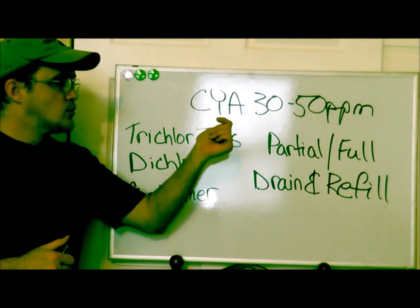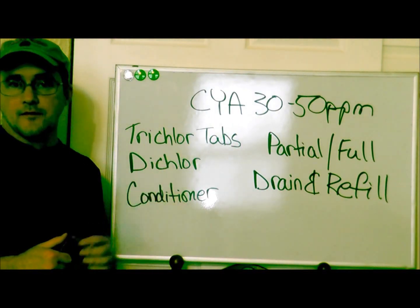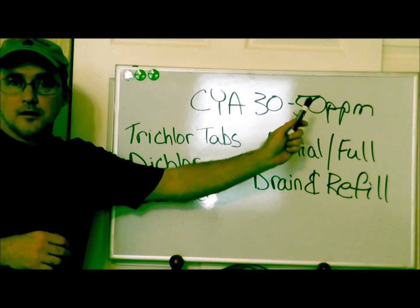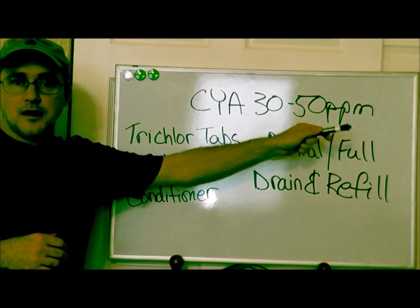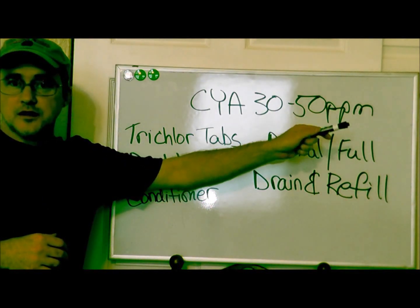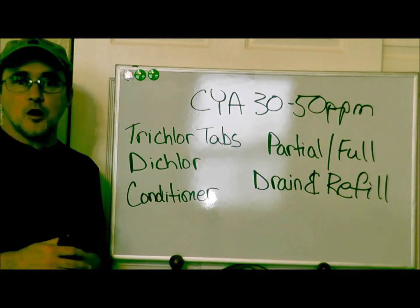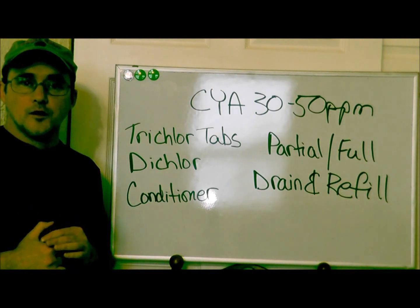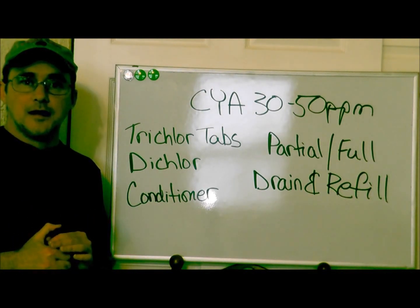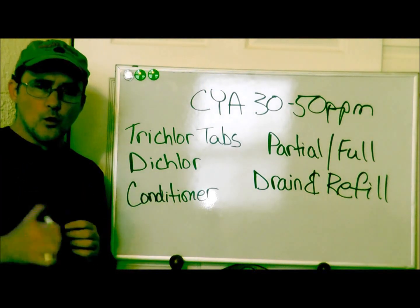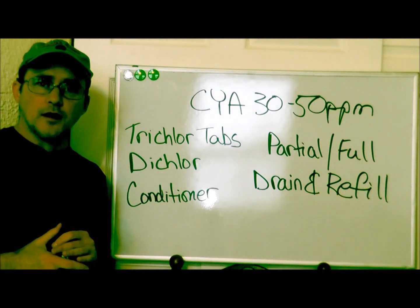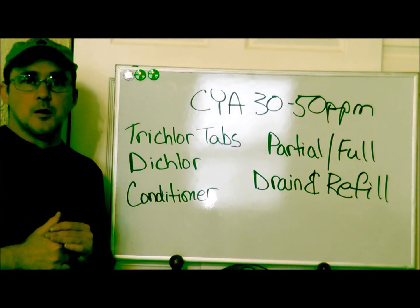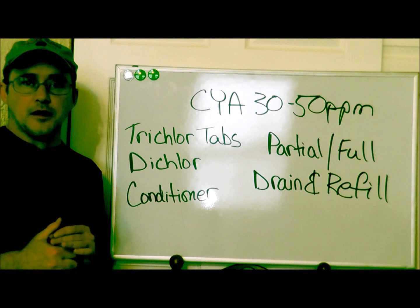Low would be 20, 10, or obviously zero. High would be, in my opinion, once you start getting into the 70, 80, 90 — especially the 90 and 100 mark — and anything above that can render your chlorine very, very ineffective. You want to run your chlorine between one and a half to three and a half parts per million.